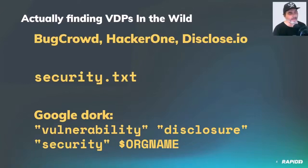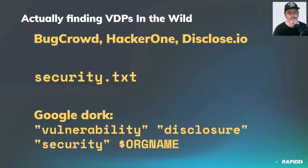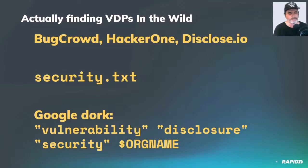If all of these methods fail, I kind of have to assume you don't have a VDP — though that might not be true. There are certainly other ways to advertise VDPs, but if it's not one of these roughly five things, it is effectively invisible to me and most people in the vulnerability disclosure business. Bug bounty programs tend to have their own presence, but if you're running a homegrown bug bounty program and you're not showing up on that Google dork or that security.txt, this is an easy problem to solve.